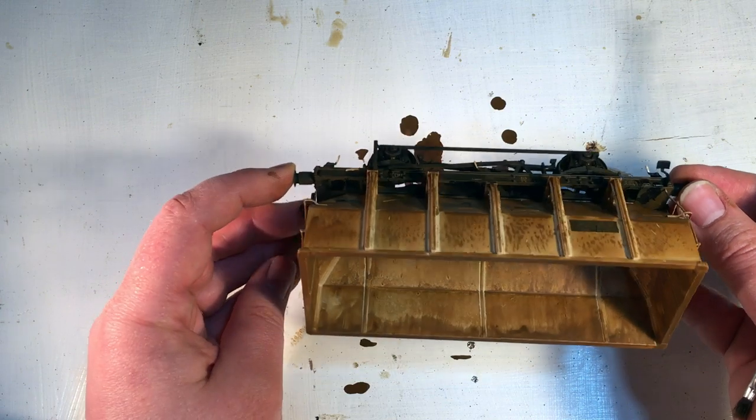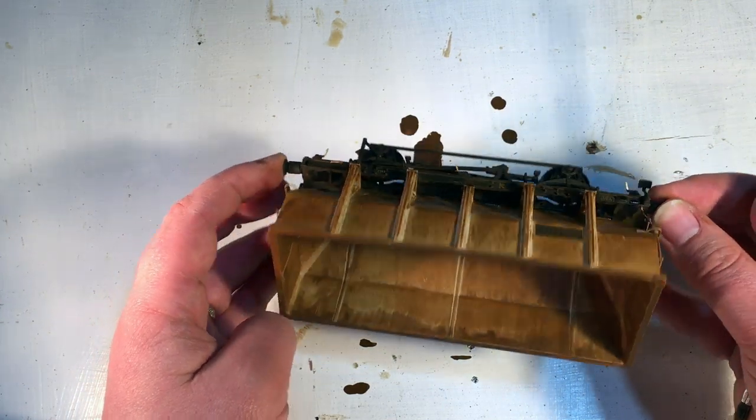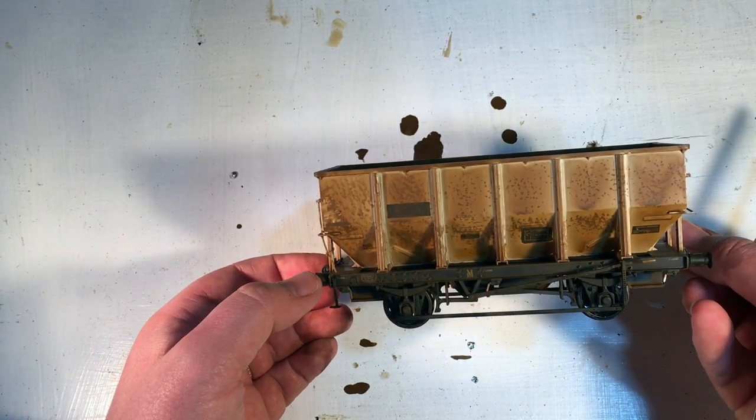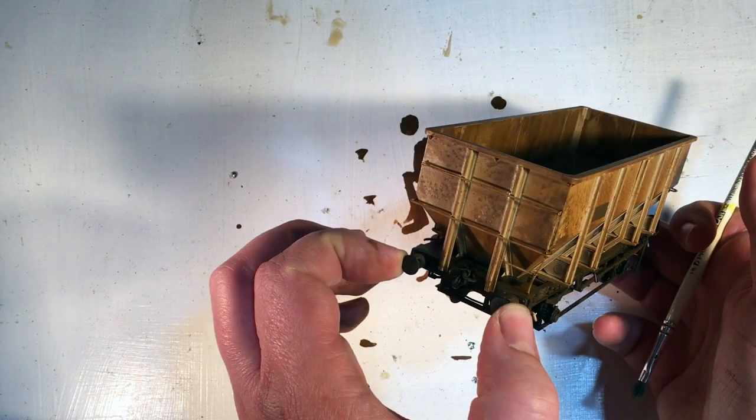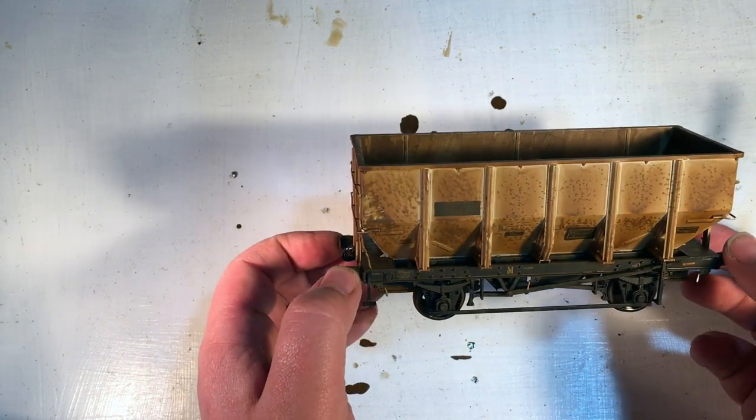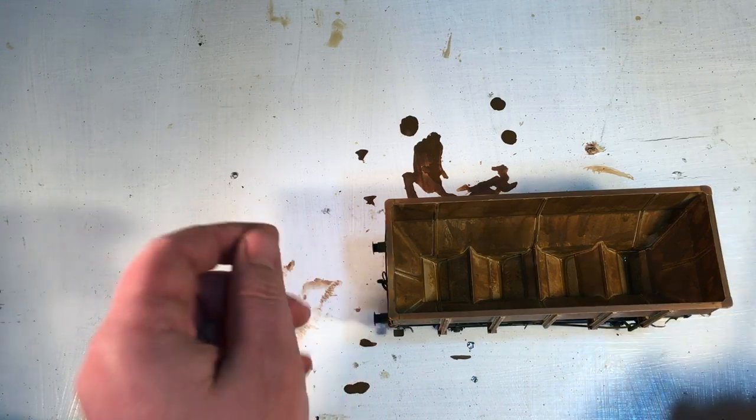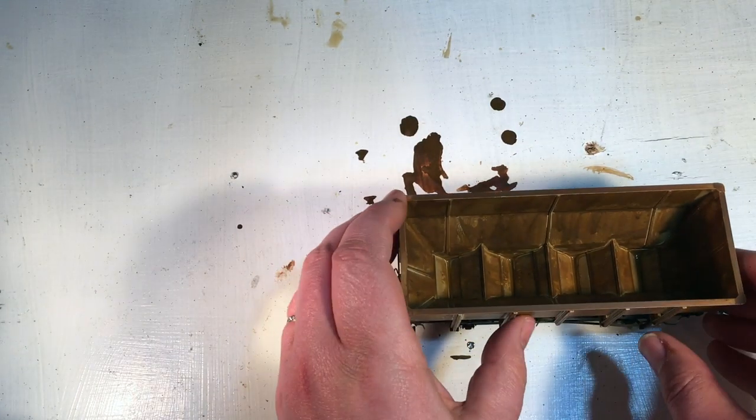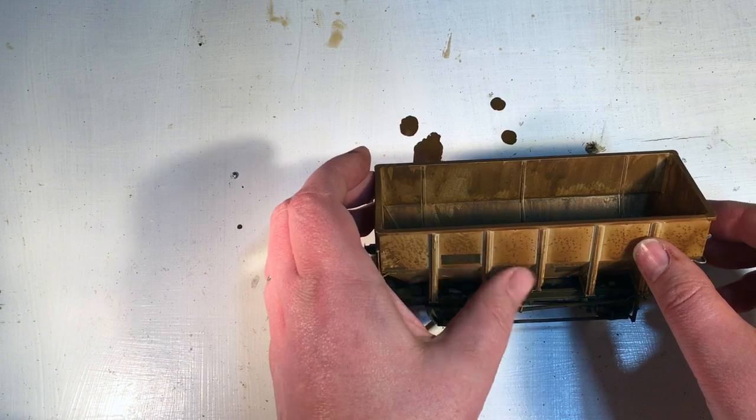It might look a little bit weird at the moment, but that's because we've still got the next stage of this weathering to perform. The actual weathering coating that's on there, you can see, is pretty much dry. I've had it underneath a heat lamp just to help this to dry out.